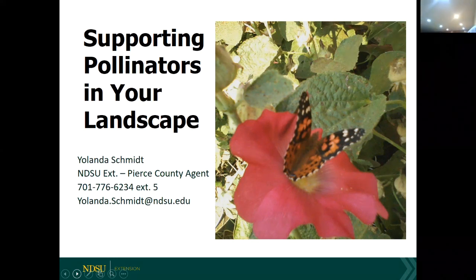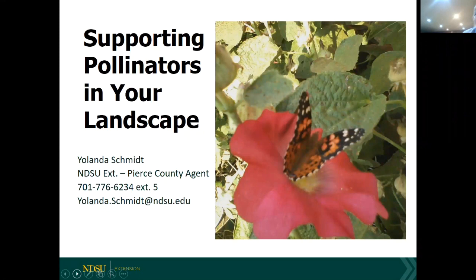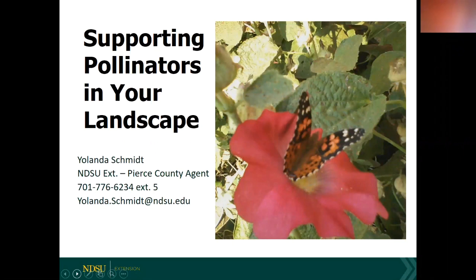Honeybees pollinate a variety of crops which include apples, blueberries, oranges, and almonds, just to name a few. In urban landscapes, many flowering native plants which are key food sources for pollinators have been replaced by houses, roads, lawns, and whatnot. So there are some definite ways that we can try to help support pollinators in our landscape.